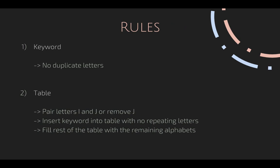So the rules are when you're choosing the keyword and filling it in the table there should be no duplicate letters. And in the table since we're making a five by five matrix and there are only 26 alphabets, you should pair the letters I and J or you should remove the letter J.